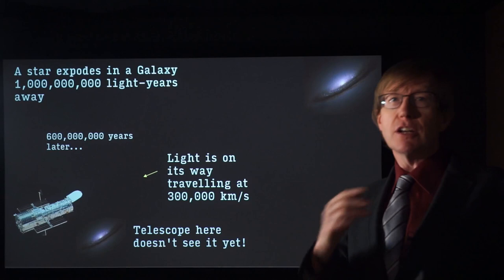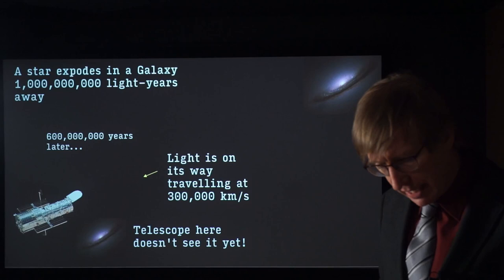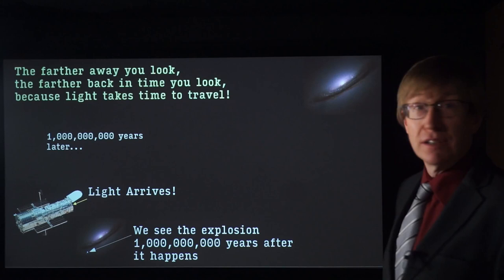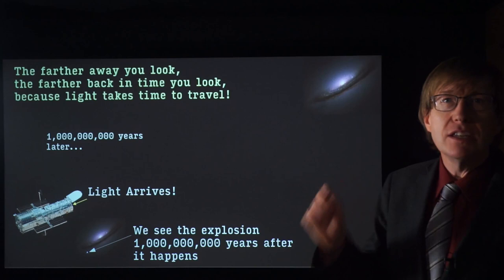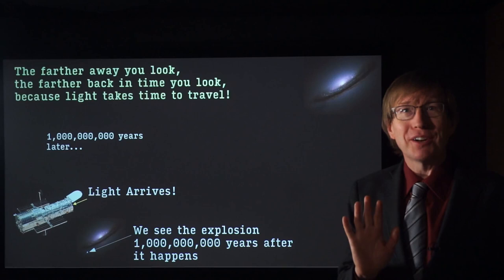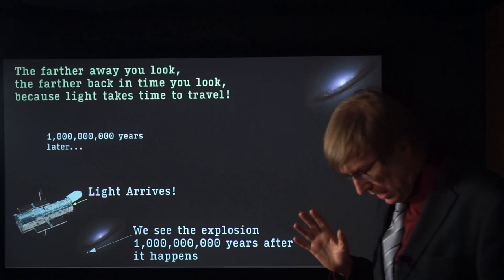We wait another 300 million years. 600 million years later, the light is still on its way, traveling at 300,000 kilometers per second. Finally, after a billion years, the light makes it to the Earth. The telescope sees the explosion. We see the explosion one billion years after it happened. In other words, the farther away we look, the farther back in time we look, because light takes time to travel. It's so unbelievably cool.